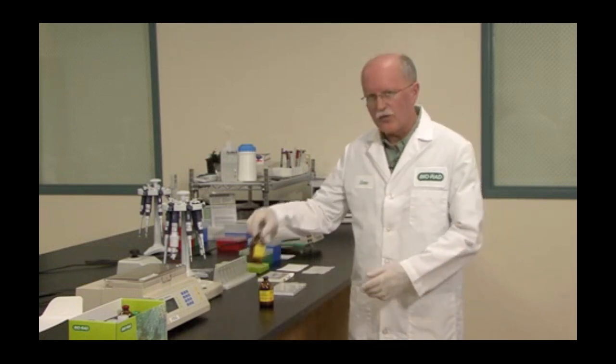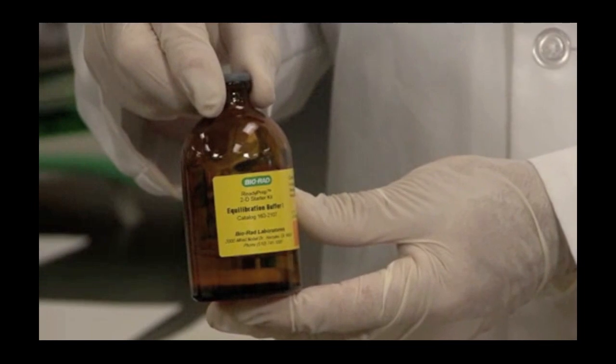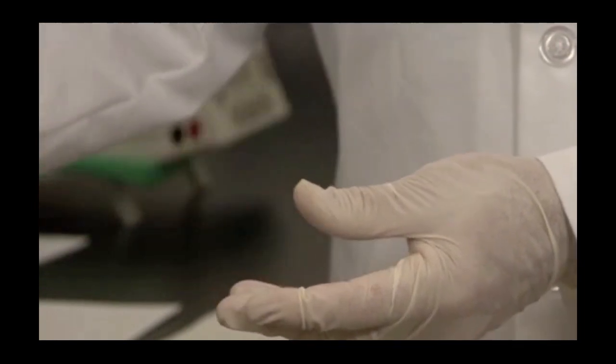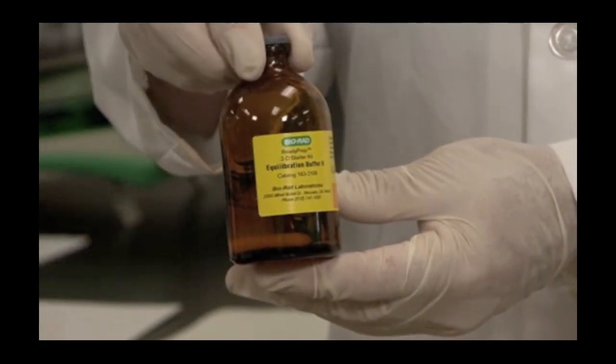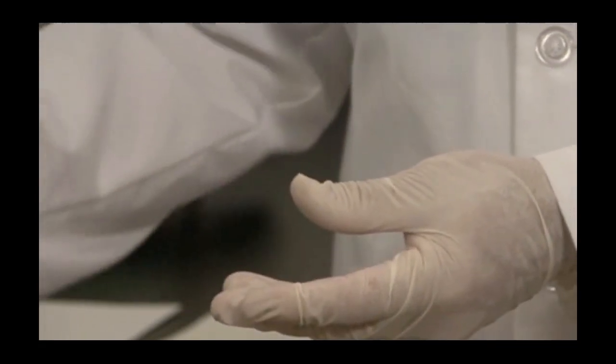The steps following rehydration and focusing of the IPG strip are equilibration of the IPG strip in preparation for the second dimension gel, which I will now demonstrate. The equilibration process is a two-step procedure. Equilibration buffer number one contains DTT for reduction of proteins in the strip. Equilibration buffer number two contains iodoacetamide for alkylation of proteins in the strip. Each solution contains SDS for denaturation of proteins in the IPG strip to ensure optimal performance in the second dimension.